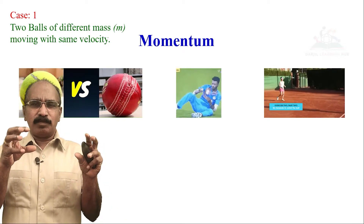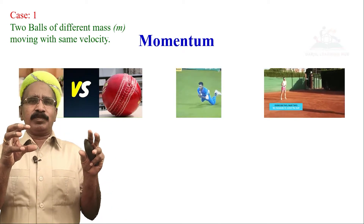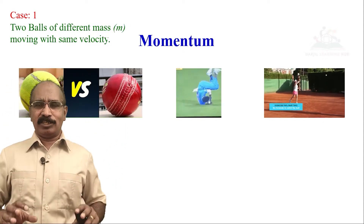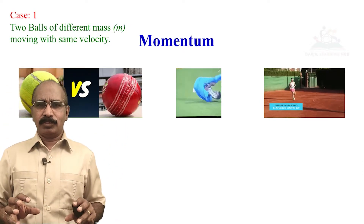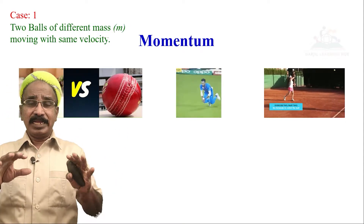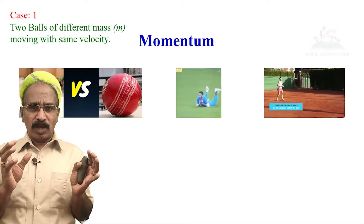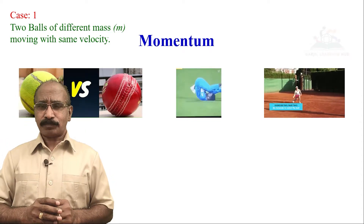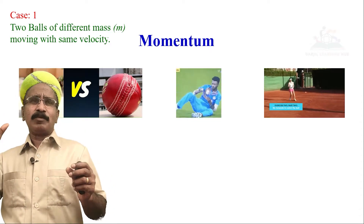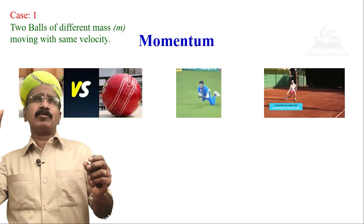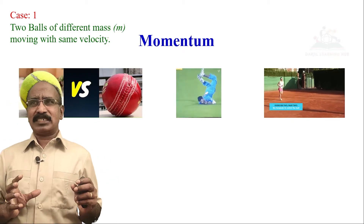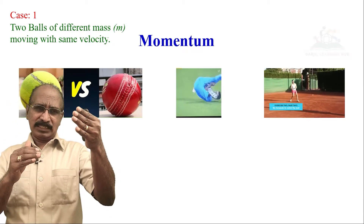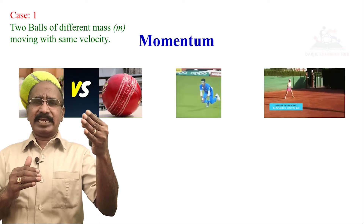The two bodies move with the same velocity. Different mass moving with the same velocity. The first body is a cricket ball, moving at the same velocity — five meters per second.